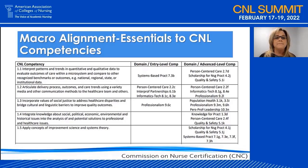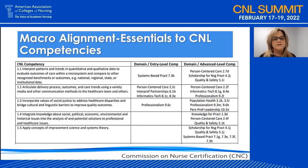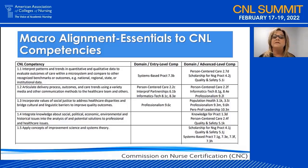Looking at this chart, we examined CNL competency 1.1, which states: interpret patterns and trends in quantitative and qualitative data to evaluate outcomes of care within microsystems and compare to other recognized benchmarks or outcomes — national, regional, state, and institutional data. This CNL competency aligned with the AACN Essentials systems-based sub-competency 7.3b. It also aligned very well with level two sub-competencies: person-centered care 2.7d, scholarship for nursing practice 4.2j, and quality and safety 5.1.